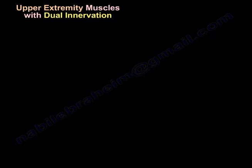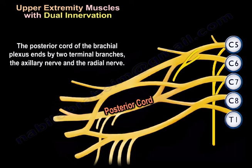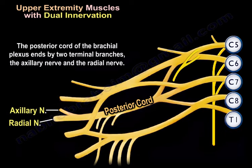The posterior cord of the brachial plexus ends by two terminal branches: the axillary nerve and the radial nerve.